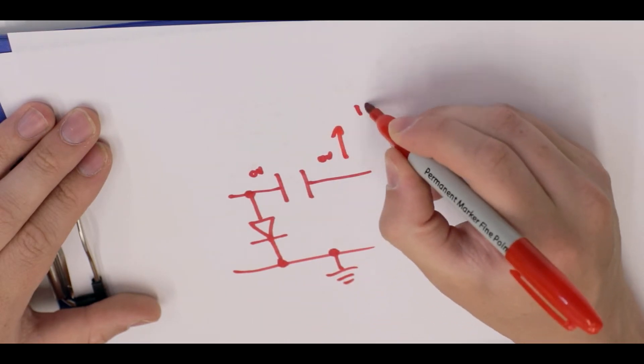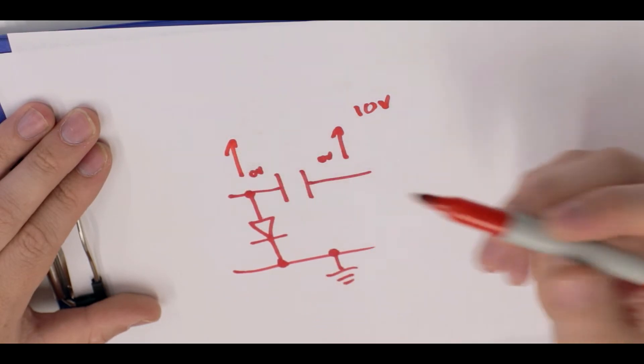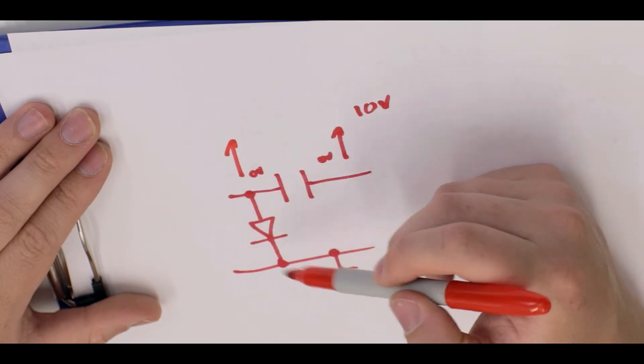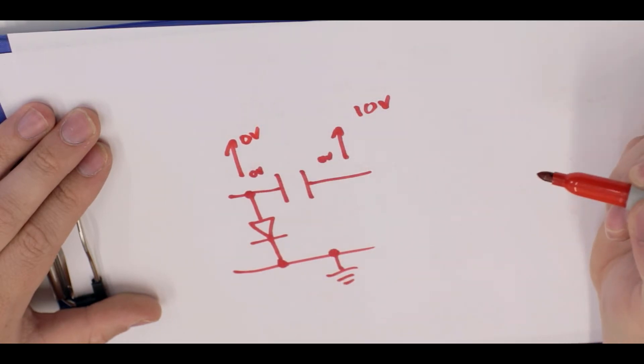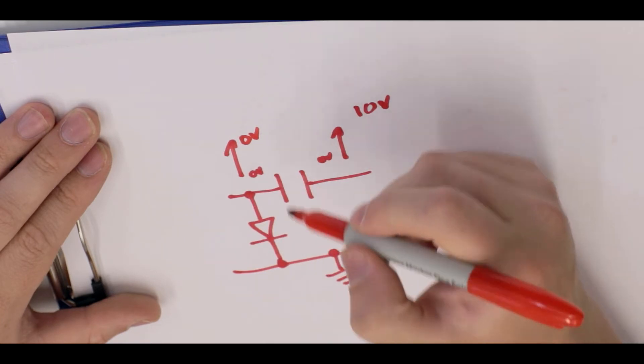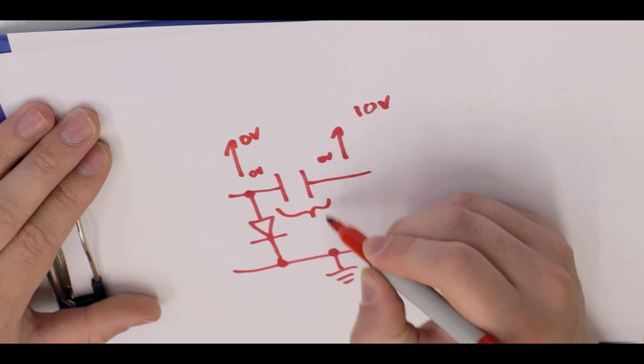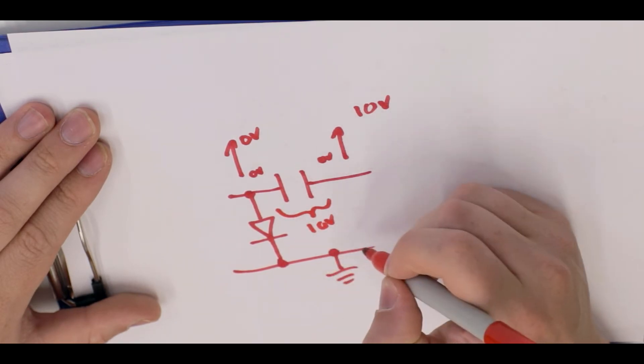Now he also, due to capacitive coupling, wants to go to 10 volts, but he can't because the diode will get rid of the voltage. So he stays at zero volts. And if we keep this stable, eventually the capacitor is going to like the fact that there's 10 volts across him and he'll always try to maintain 10 volts.